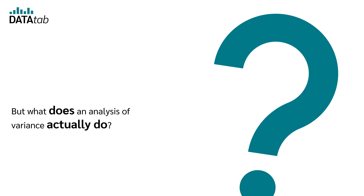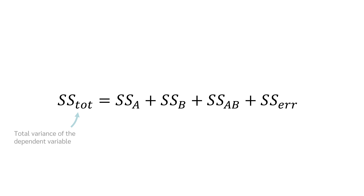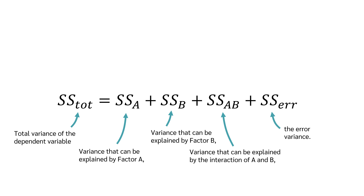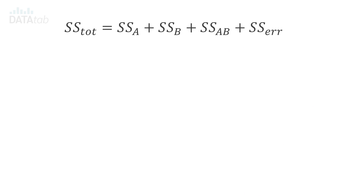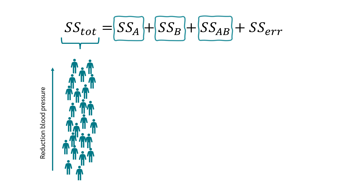What does an analysis of variance actually do, and why is the word 'variance' in it? In a two-way analysis of variance, the total variance of the dependent variable is divided into the variance explained by factor A, the variance explained by factor B, the variance of the interaction, and the error variance. Note that SS refers to the sum of squares rather than variance directly. The dependent variable has some variance — in our example, not everyone has the same reduction in blood pressure — and we want to know how much of this variance can be explained by drug type, gender, and their interaction.